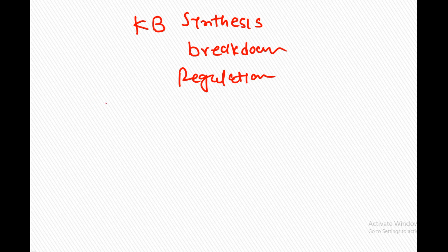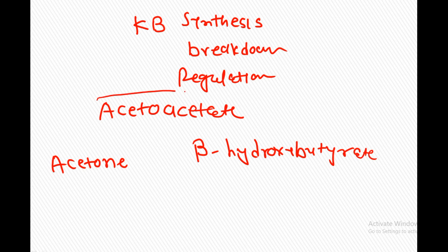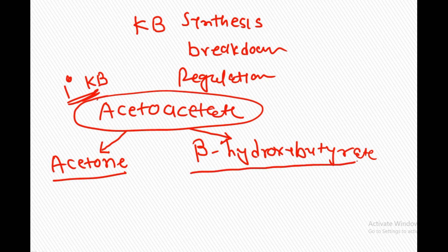So what are the ketone bodies? Acetoacetate, acetone, and beta-hydroxybutyrate — these three are the ketone bodies. Acetoacetate is called the primary ketone body because it is first synthesized during ketone body synthesis. From acetoacetate, acetone and beta-hydroxybutyrate are synthesized.